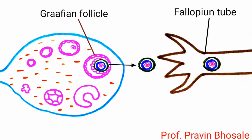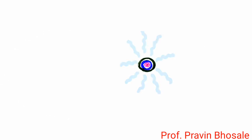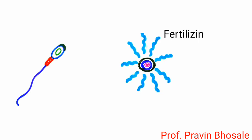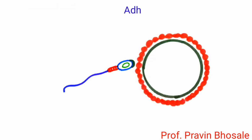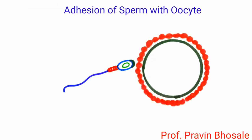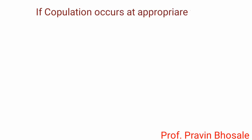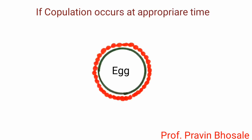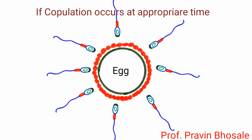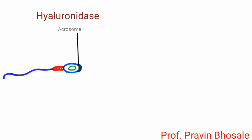The oocyte secretes a glycoprotein called fertilizin. The surface of the sperm head produces anti-fertilizin. Adhesion of sperm with the surface of the oocyte is due to the fertilizin-anti-fertilizin reaction. This reaction is highly species specific. If copulation occurs at the appropriate time, the egg is surrounded by many sperms.